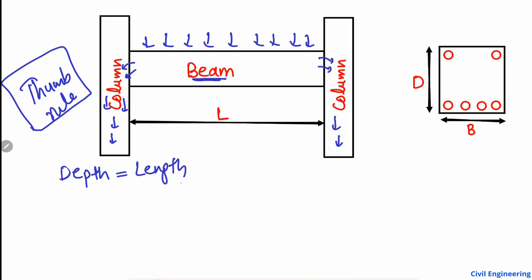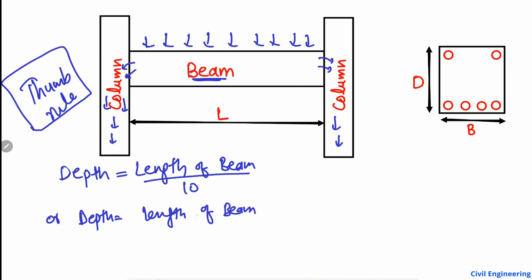The thumb rule states that the depth of the beam can be found by dividing the length of the beam by 10. Alternatively, the depth can also be found by dividing the length of the beam by 12. So these two formulas can both be used to find the depth of the beam.